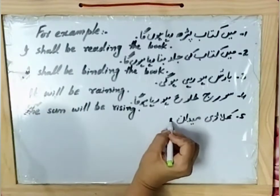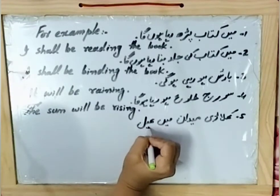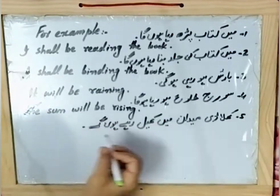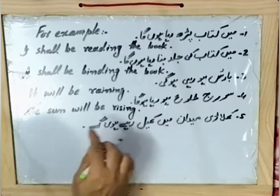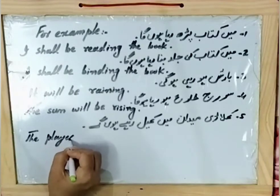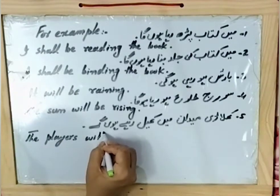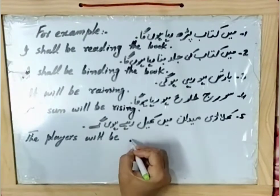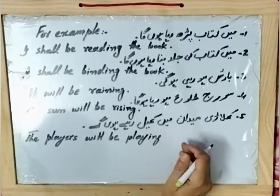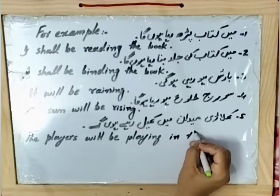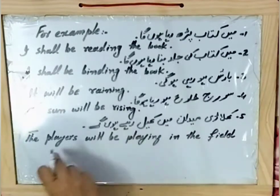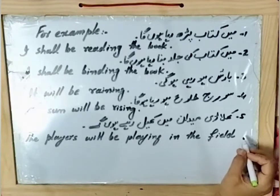Example number five: 'Khiladi maidan mein khel rahe honge' — the players will be playing in the field. Subject is 'khiladi' — plural, so 'the players.' Helping verb: 'will be.' Add '-ing' to 'play' to get 'playing.' So: the players will be playing in the field — or 'in the ground' is also acceptable.